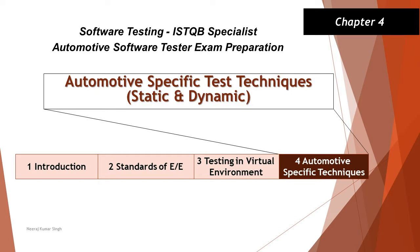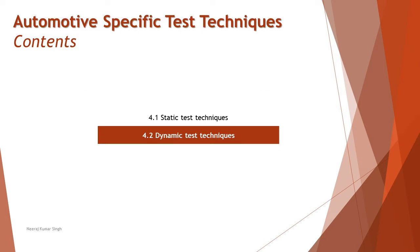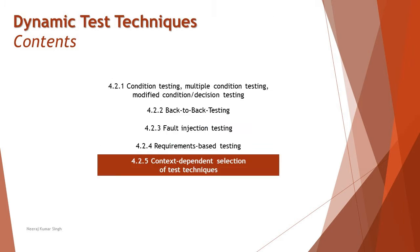Hello friends and greetings for the day. Welcome back to another tutorial on ISTQB Specialist Automotive Tester Certification. As part of this tutorial, we are still in chapter 4 talking about automotive specific test techniques, and we are in section 4.2 dynamic test techniques — specifically the last tutorial covering the second part of 4.2.5 context dependent selection of test techniques.